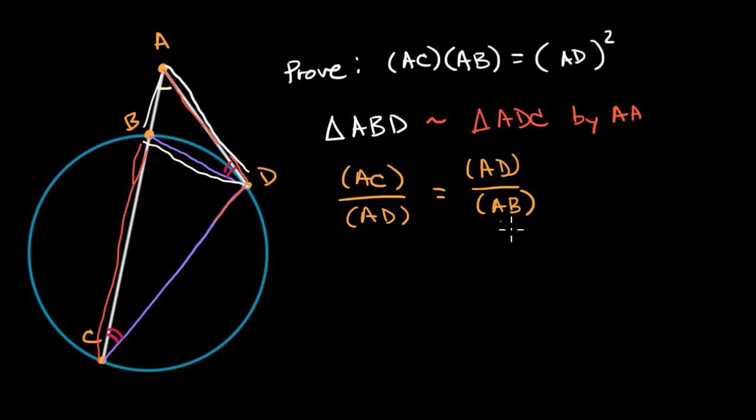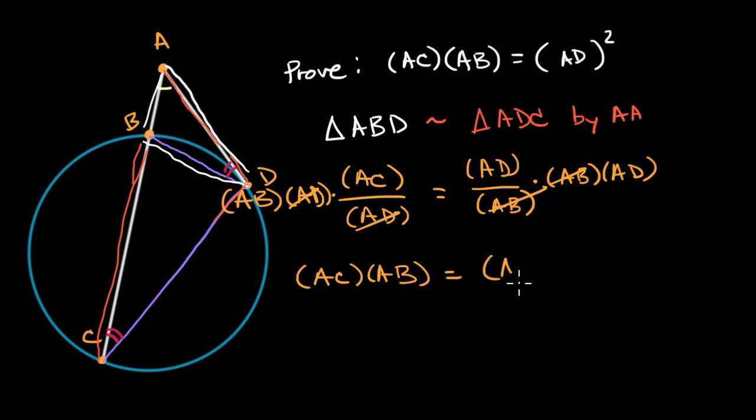Now let's multiply both sides by both denominators, so we're going to multiply this times AB and AD, and we're going to multiply this side by AB and AD, and what do we get? This cancels with this. On the left-hand side, we have AC times AB, and on the right-hand side, this cancels with that, we have AD squared, AD squared, and we're done.